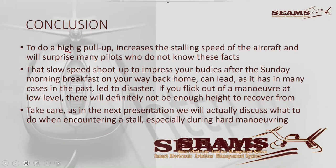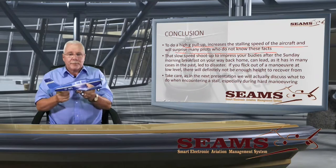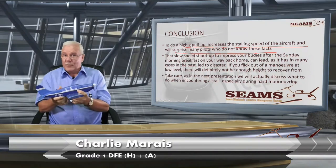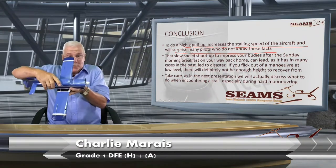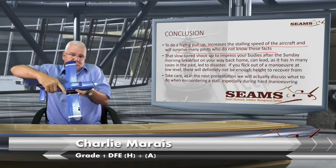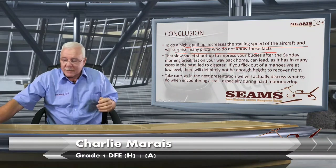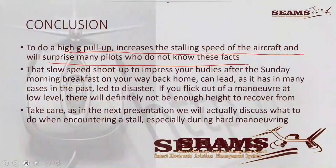A high-G pull-up increases the stalling speed of the aircraft and surprises many people. In South Africa, everybody goes for a breakfast run — they fly into a specific place, buddies get together, and afterwards when they leave, they want to give a shoot-up. Going fast and pulling as hard as they can, or going slow and banking so everyone can see the aircraft — and then they pull and they flick. Tragedy. Because nobody taught them. This will always lead to disaster — if you flick out of a maneuver at low level, you're in trouble.